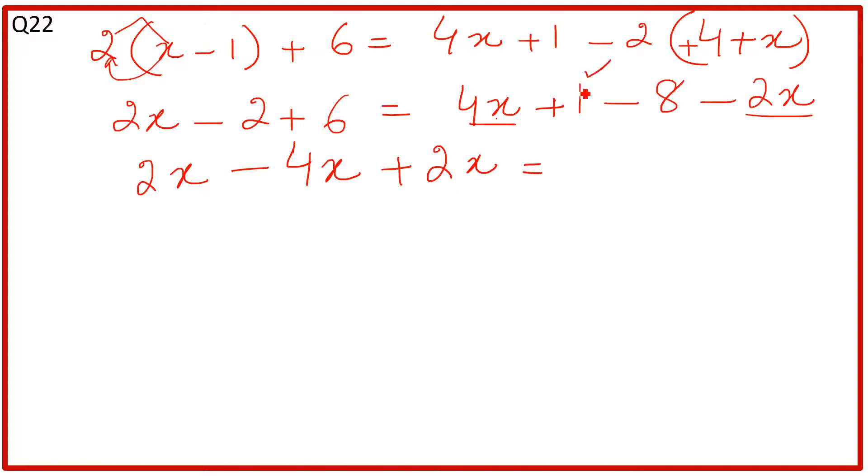On the right side we have positive 1 and negative 8. On the left we have two constants as well. Take the transpose: it becomes positive 2 and negative 6.